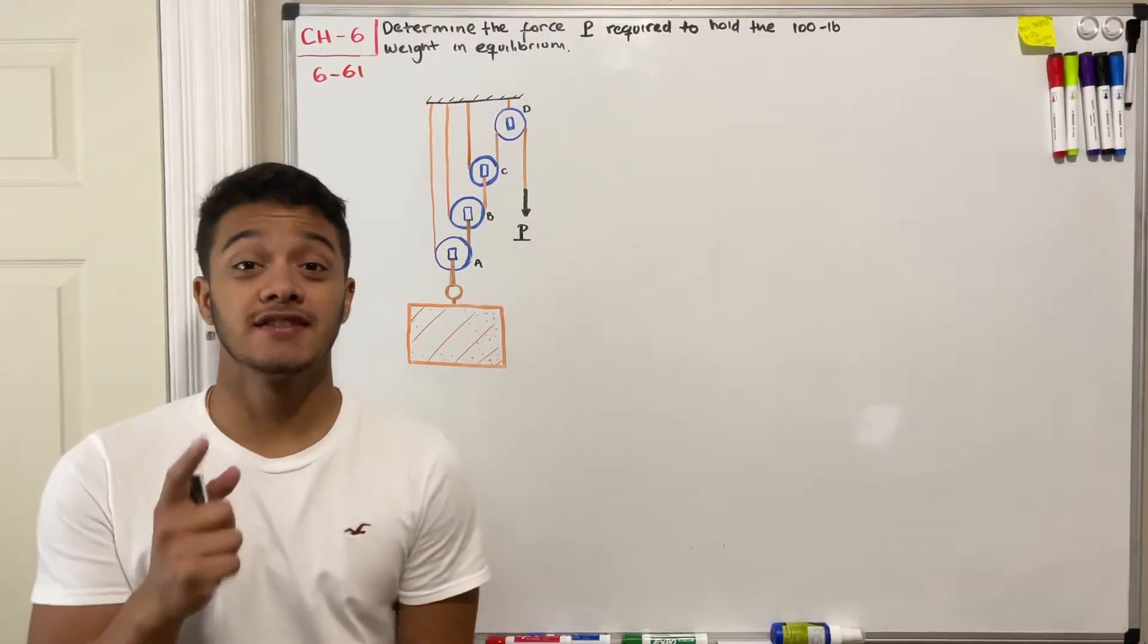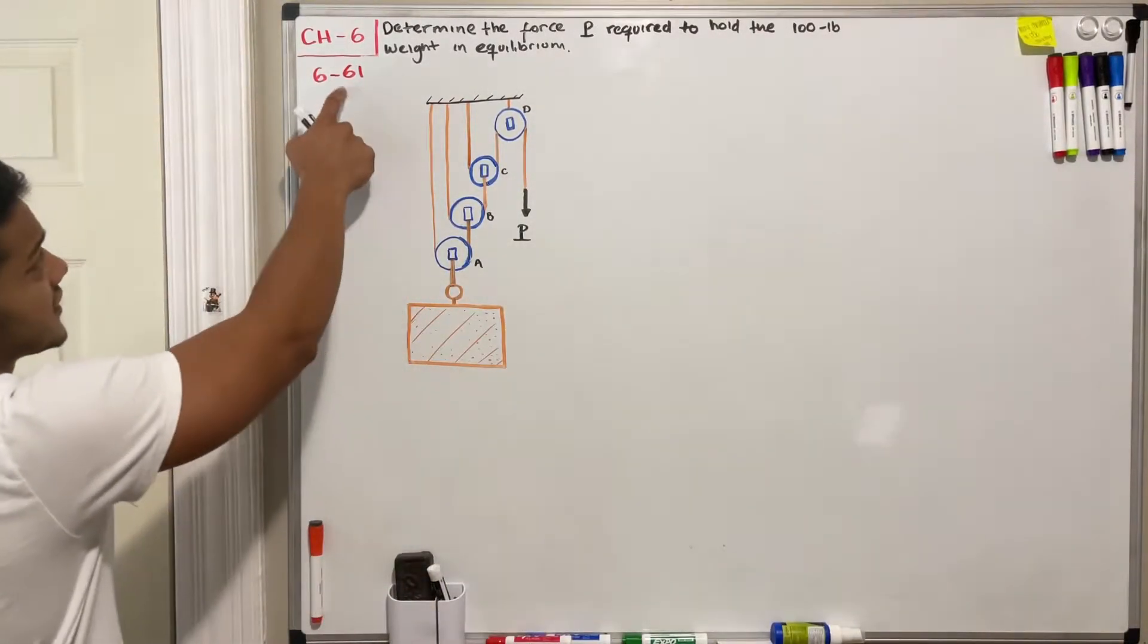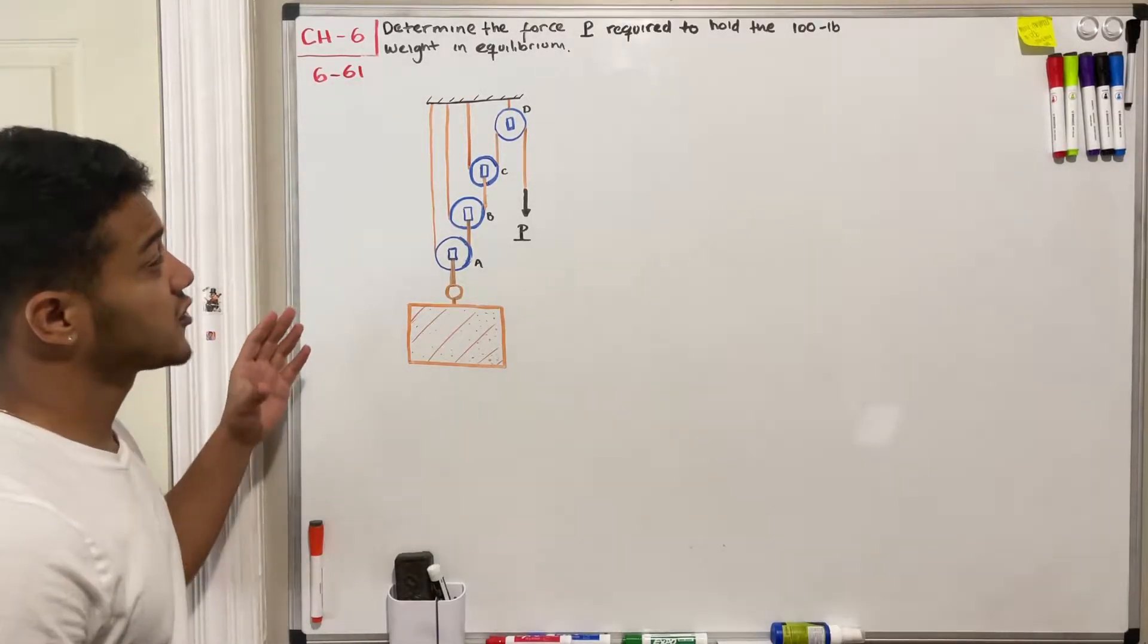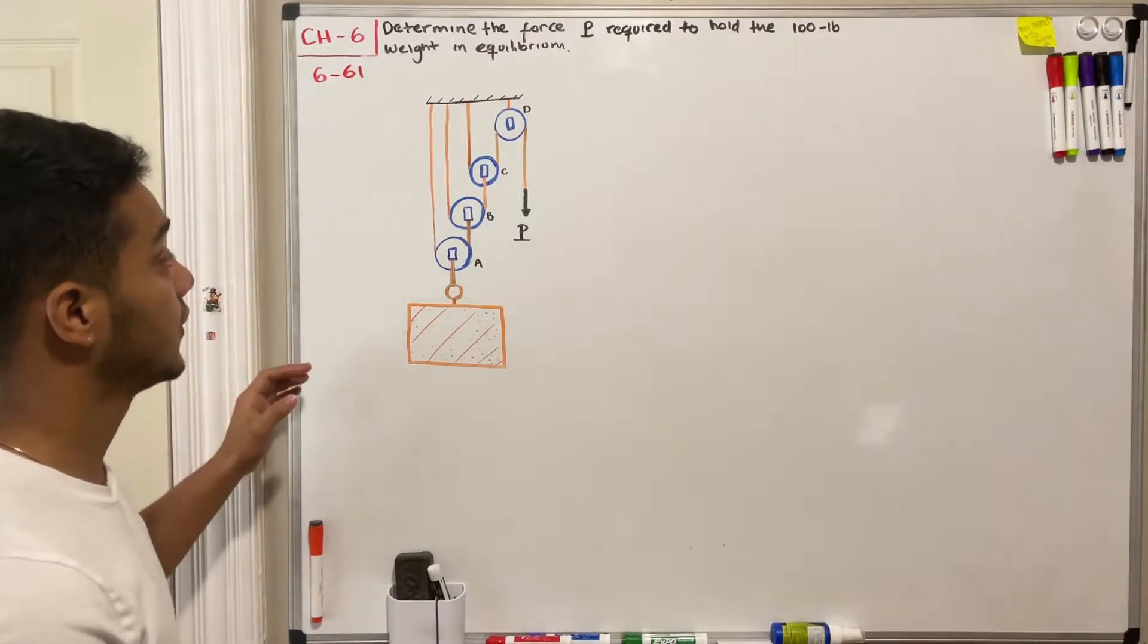Welcome back everyone to learning by teaching and learning statics. Today we're going to do problem 6-61. It says determine the force P required to hold a 100-pound weight in equilibrium.